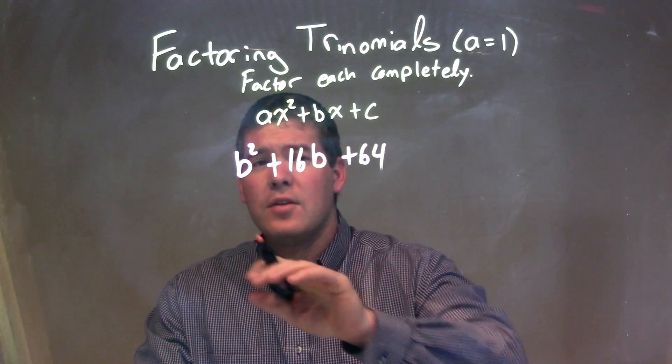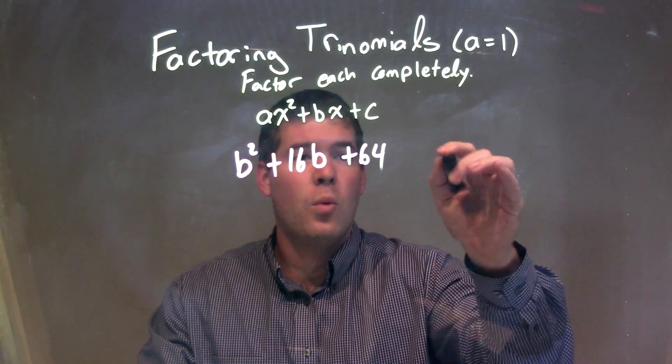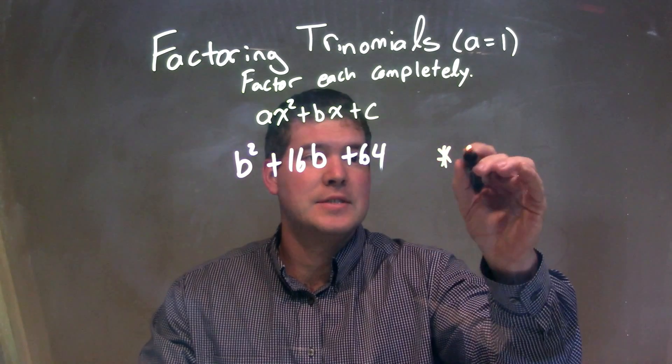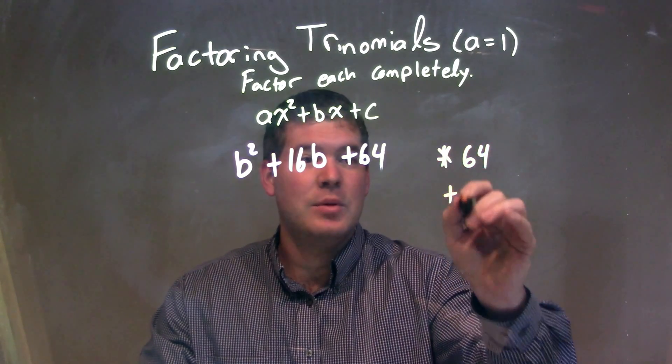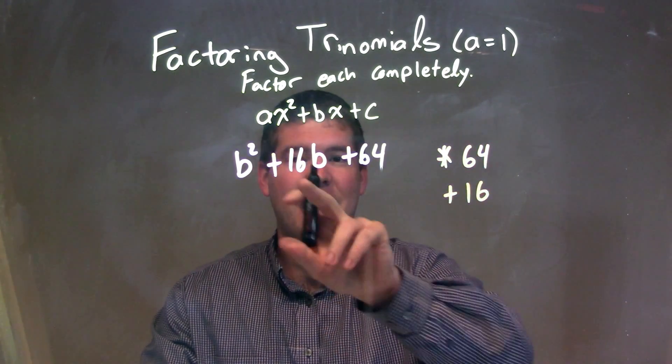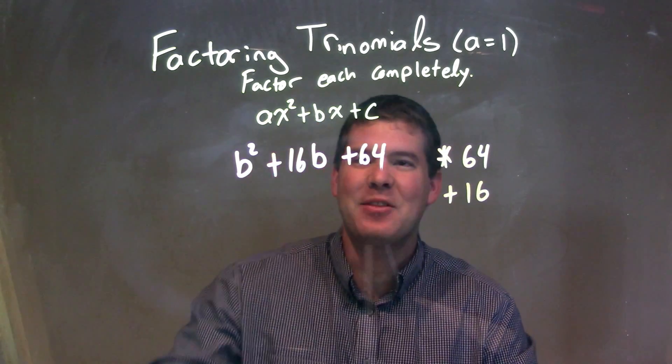Since our a value is just 1, I can ask myself the question: what two numbers multiply to be my c value, which is 64, but add to be my b value, which is 16? And that's our b value, that's 16, not the variable b.